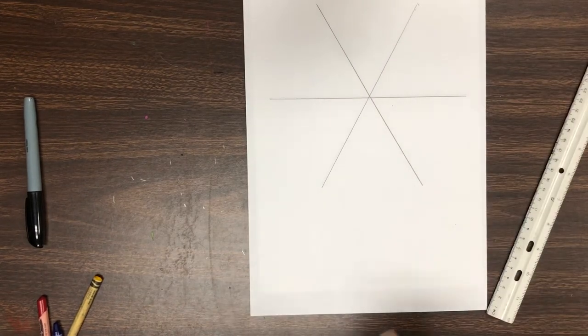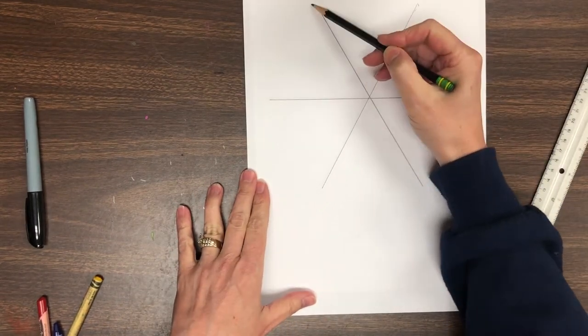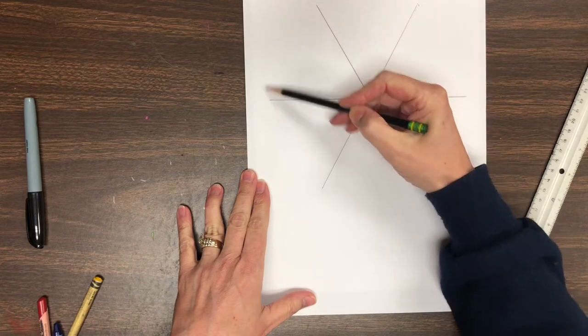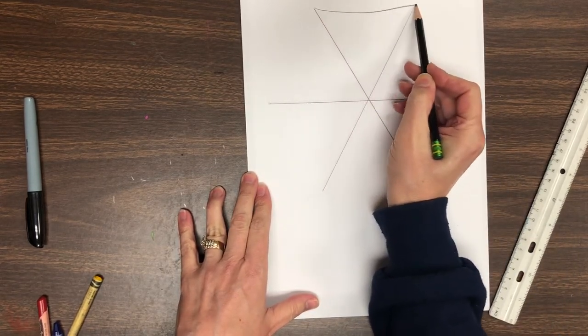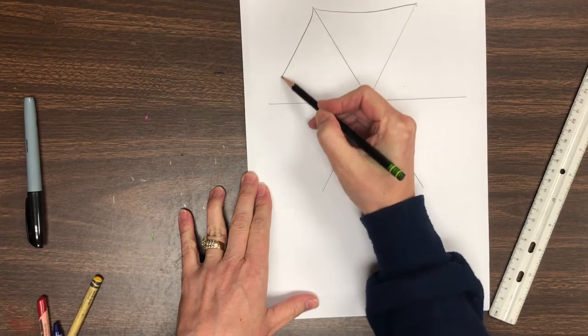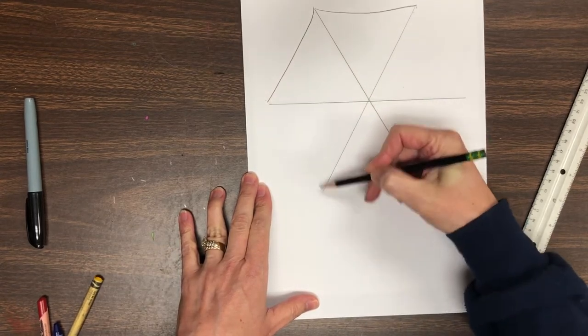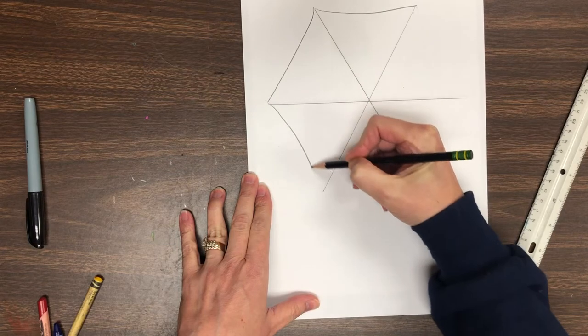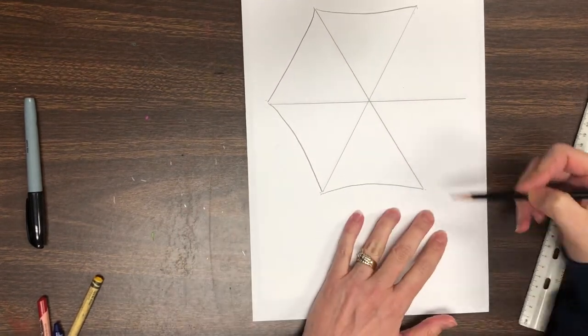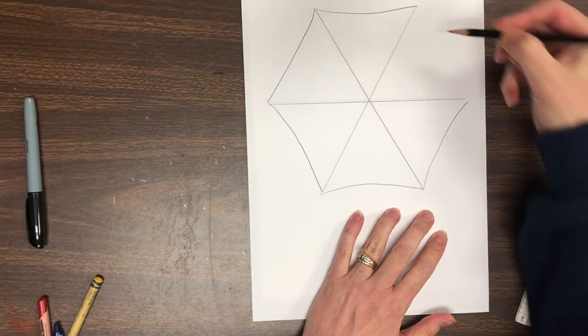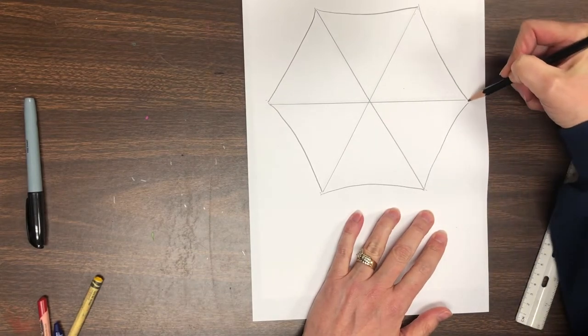Now the next step is to connect the lines. They could be connected with a straight line, a curve, or a bump. I am going to connect mine with a line that curves in just a teeny tiny bit. So draw softly and go ahead and connect all six lines to make the six sections of your umbrella. Something like that.